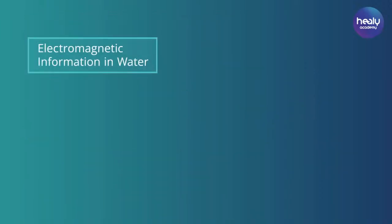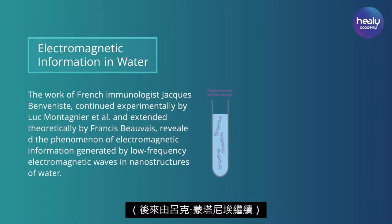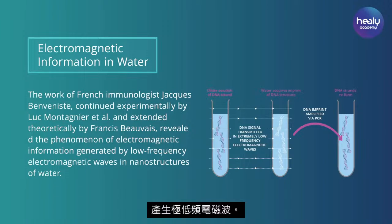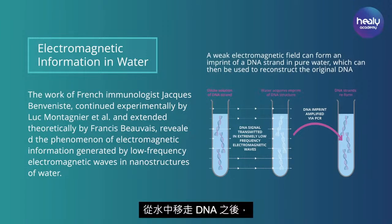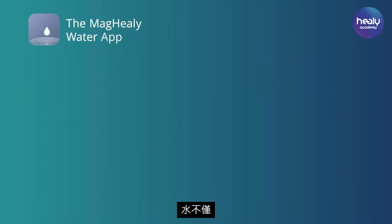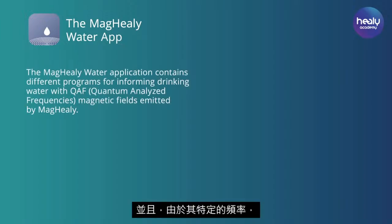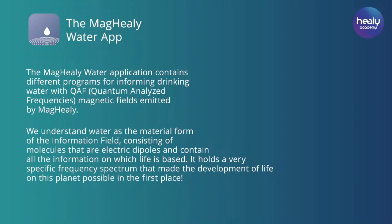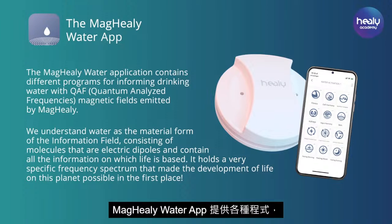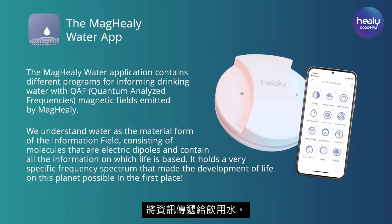The work of French immunologist Jacques Benveniste, later continued by Luc Montagnier, revealed the phenomenon of electromagnetic information generated by low-frequency electromagnetic waves in nanostructures of water. They used DNA strands generating extremely low-frequency electromagnetic waves. After the DNA was removed from the water, an imprint of the DNA information remained, and they could use this imprint to generate the same DNA via the polymerase chain reaction. Water is understood not only as consisting of very special molecules but also as the material form of the information field, receptive to electromagnetic fields and the information conveyed by them.